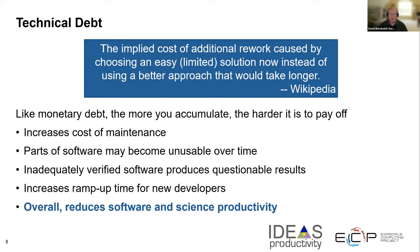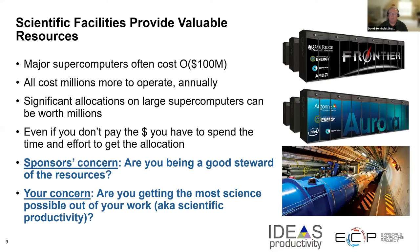Another aspect for many of us is that we're working on large supercomputers provided by funding sponsors. These things cost a lot of money and it takes a lot of effort to get an allocation on them. Even if you don't have to pay for the allocation directly, you want to make sure you're being a good steward of these resources, show the sponsors you're doing a proper job, and get as much science out of the allocation as possible — because these allocations are precious.